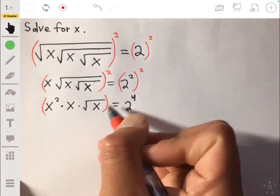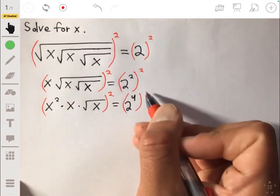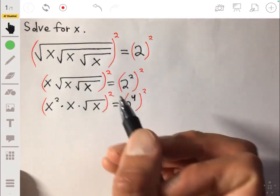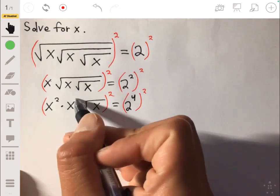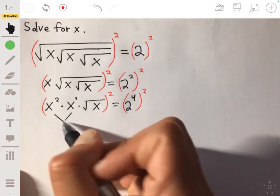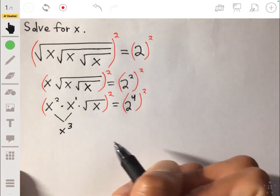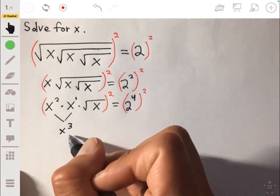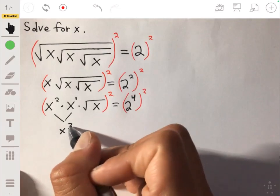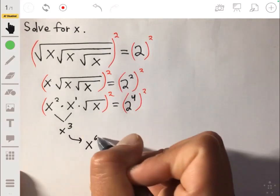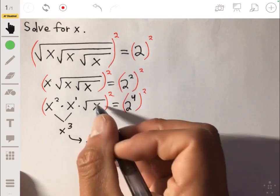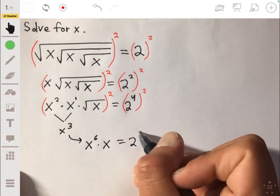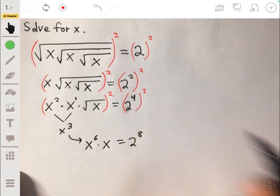And now we just do it one more time, raise both sides to the second power. This final square root will cancel. Now remember this is x to the third, so what you really have is x to the third to the second, so it's basically x to the sixth times x is equal to 2 to the eighth because you have to multiply those exponents.